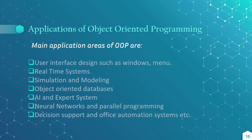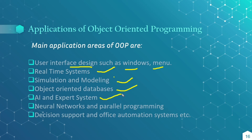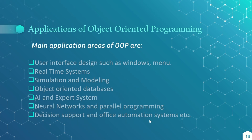Different applications of Object Oriented Programming: many application areas include user interface design such as windows and menus. It is used to develop real-time systems, and also used in simulation and modeling. We can also develop object oriented databases. And it is used in AI — artificial intelligence — and expert systems, which are nowadays a very popular topic, used to develop virtual systems in every electronic or any type of home application. Another application is neural networks and parallel programming. Also desktop support and office automation systems.